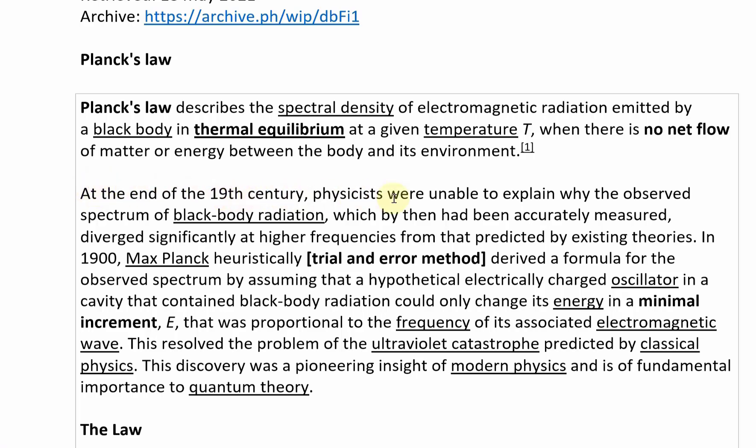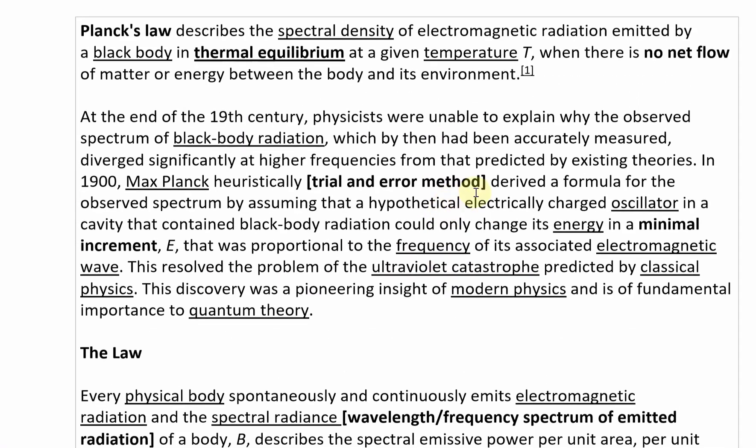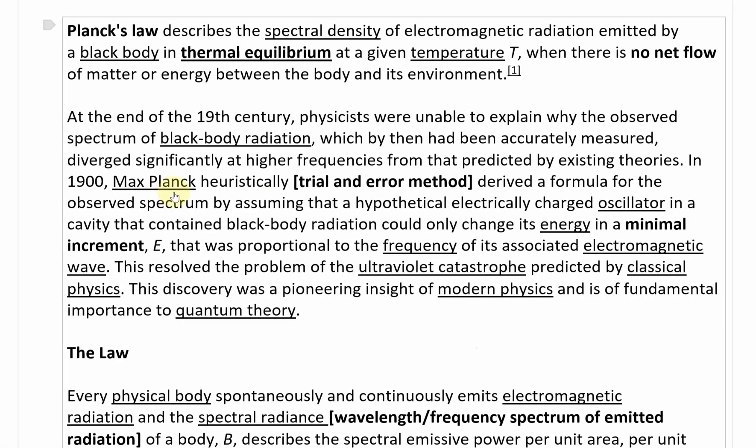At the end of the 19th century, physicists were unable to explain why the observed spectrum of blackbody radiation, which by then had been accurately measured, diverged significantly at higher frequency from that predicted by existing theories. In 1900, Max Planck heuristically, or in other words, by trial and error method...